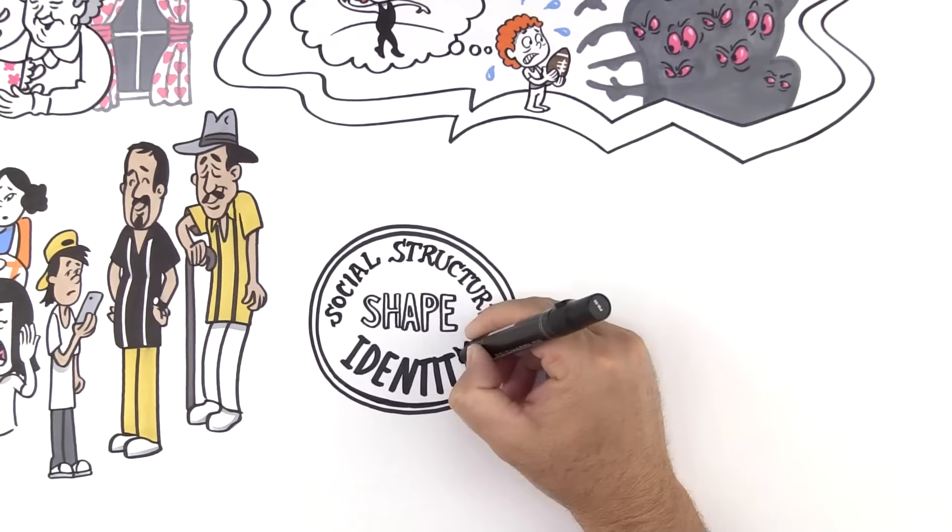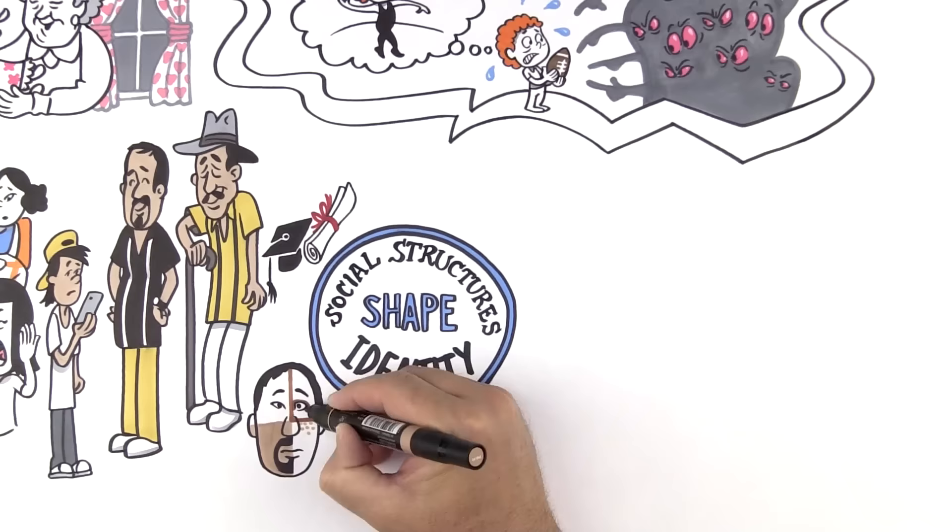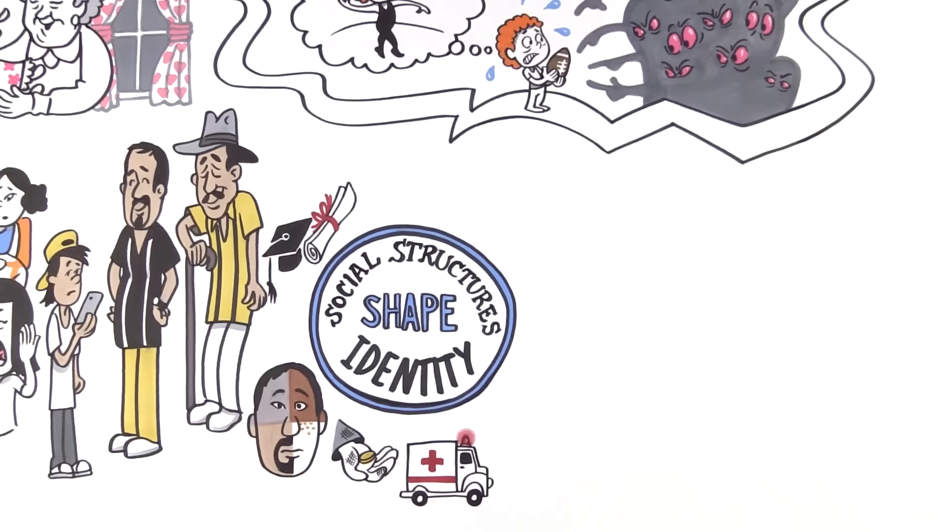These are just a couple examples that demonstrate how social structures construct, limit, and place value on identities. This becomes highly problematic when school completion, racial profiling, poverty, and health disparities are associated with specific identities.